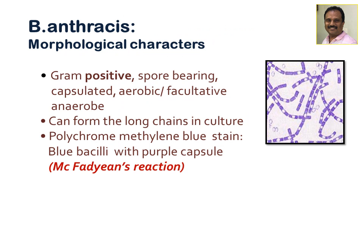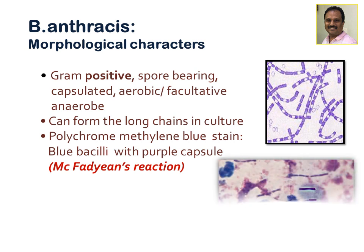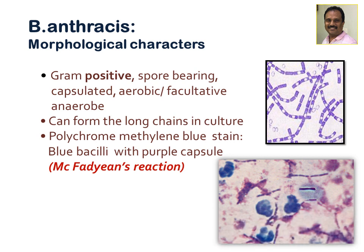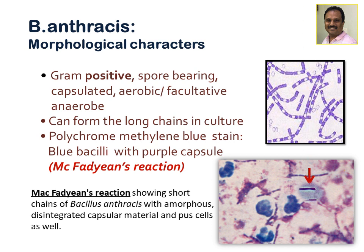Bacillus anthracis is Gram-positive, spore-bearing, encapsulated, aerobic or facultatively anaerobic. In culture, they appear in long chains. Using polychrome methyl blue stain, the bacilli stain blue with a purple capsule — as visible in the photograph showing blue-colored bacilli surrounded by a purple capsule indicated by arrow marks. This reaction is known as the McFadyean reaction, showing short chains of Bacillus anthracis with amorphous disintegrated capsular material.